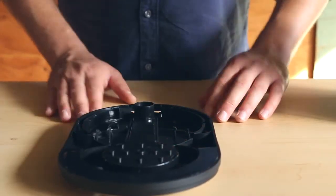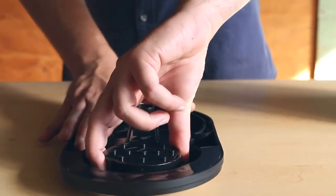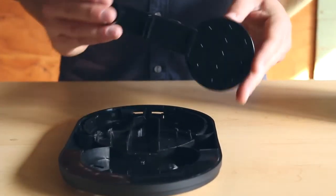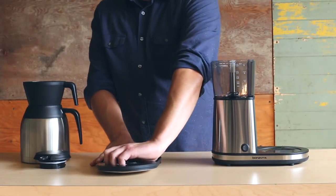Flip the lid over so the shower head is facing up. Use one hand to stabilize the brewer lid, then twist the shower head slightly to the right and pull it up and out. Removal of the shower head may also require some force.